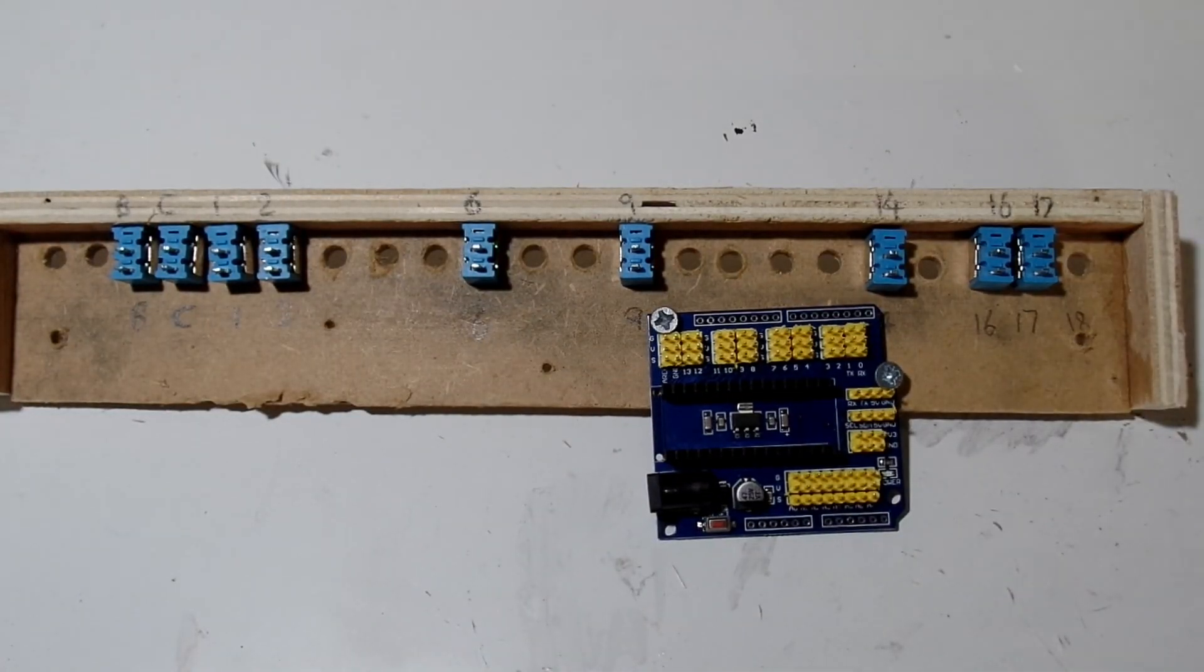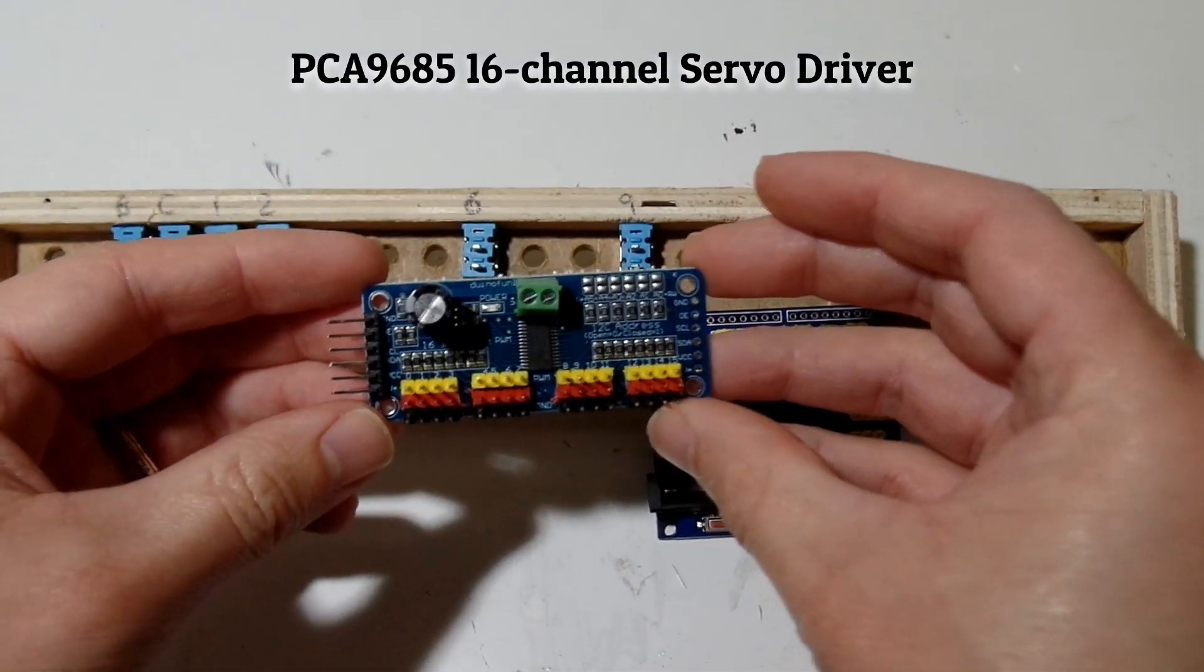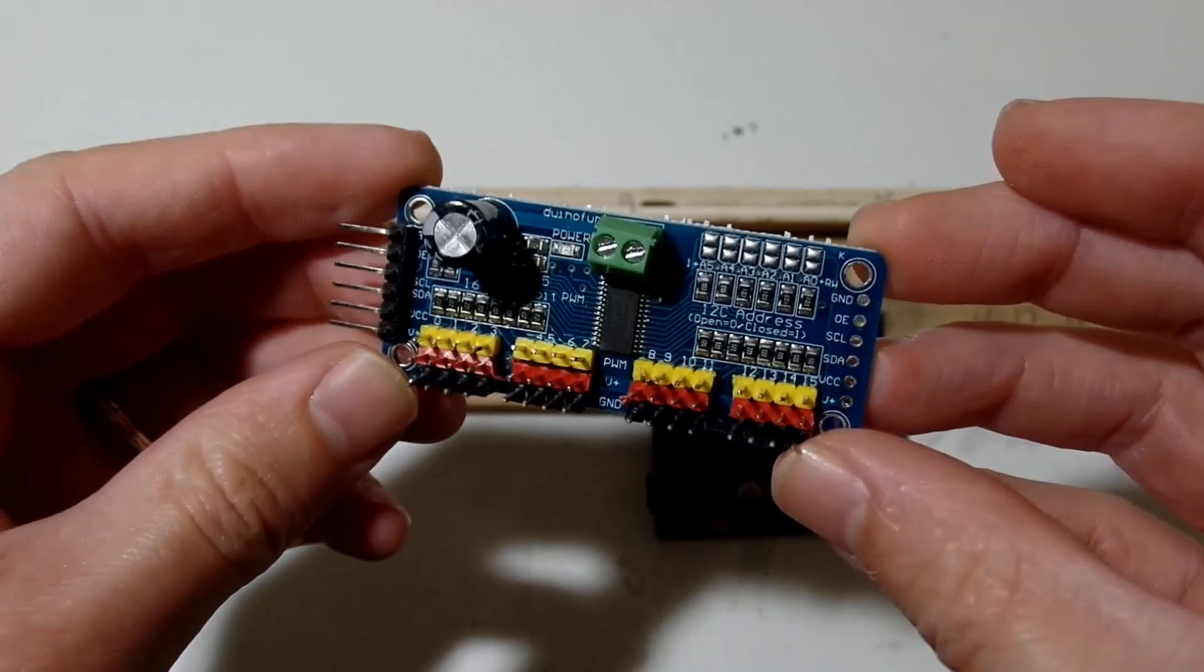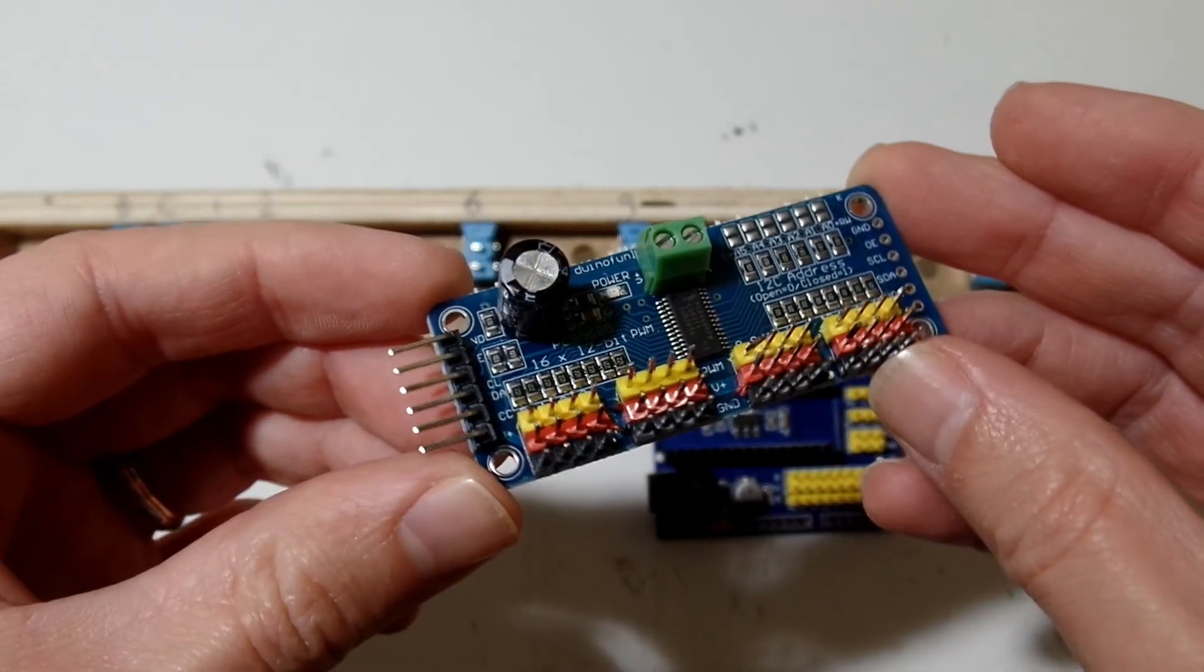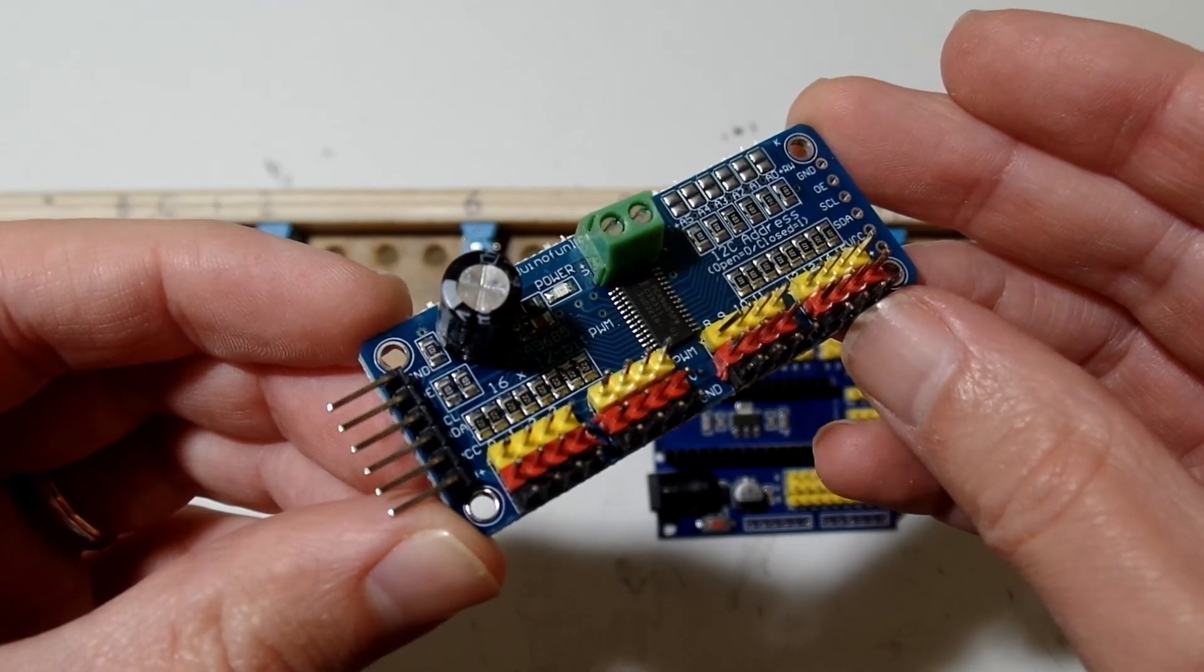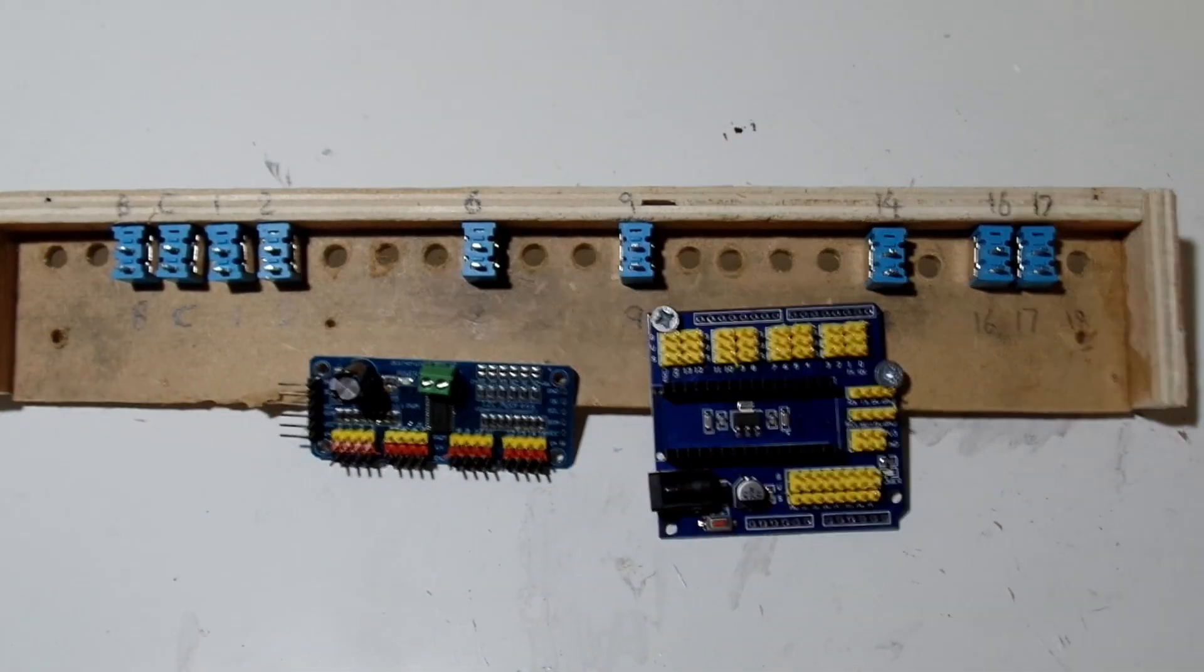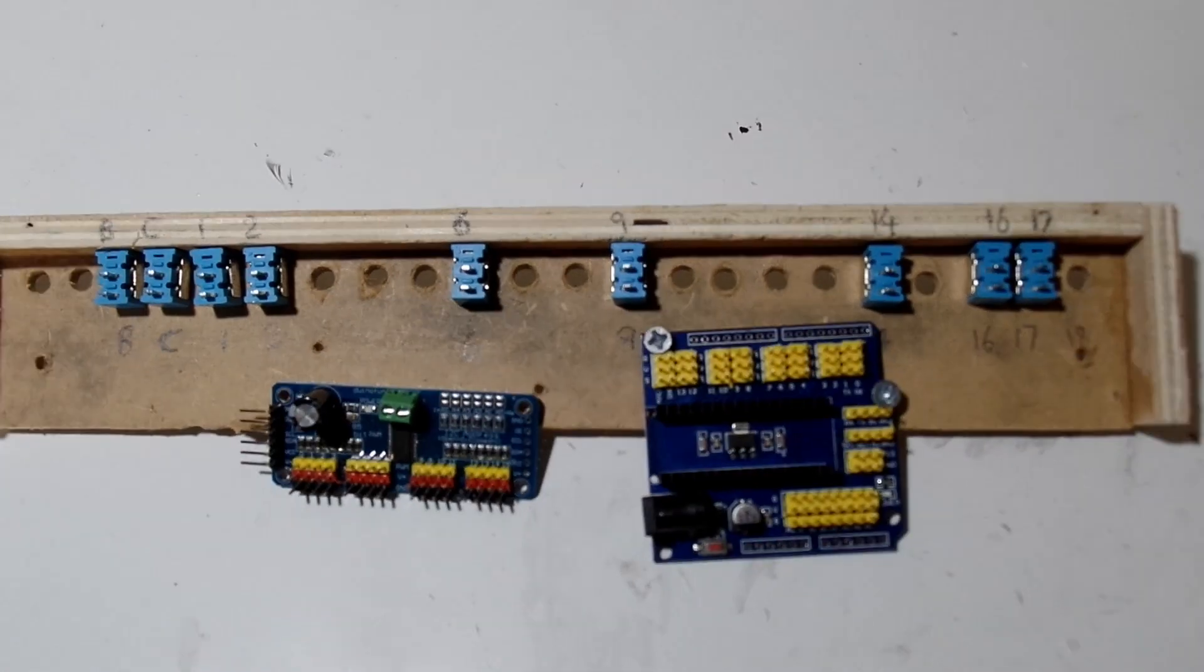That's when I found this. It's a PCA9685 16-channel servo driver board. It uses five volts from the Arduino just to power its logic chip, two inputs from the Arduino to transfer data, and takes a second power source for running the servos. Now we're talking. With just one Arduino Nano and two power sources, I can control 16 servos, which is more than enough for this layout right now.